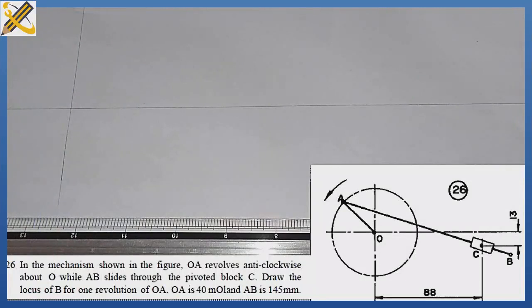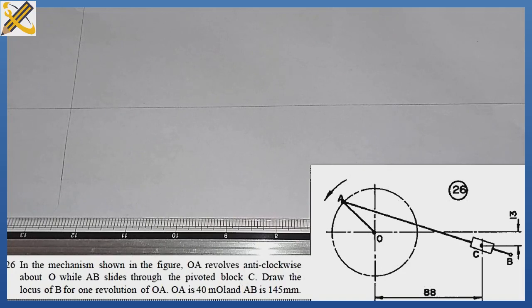Considering the question on the screen, the crank OA moves in an anticlockwise direction. As it revolves, the link AB slides through the pivot at point C — that point C acts as a junction while the rod AB slides through it. We are told to plot the locus of point B when crank OA makes a complete revolution.